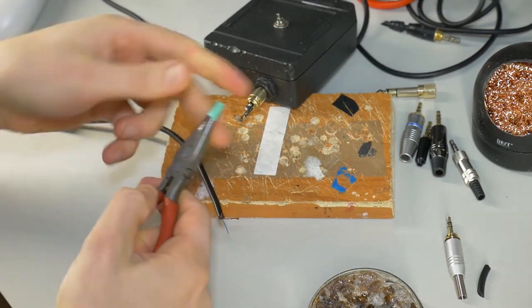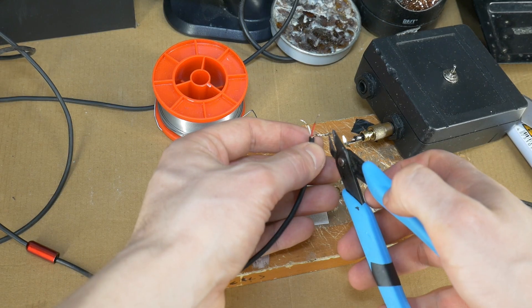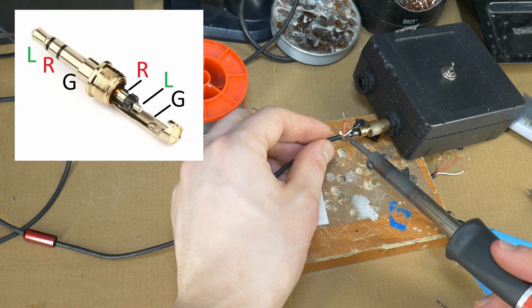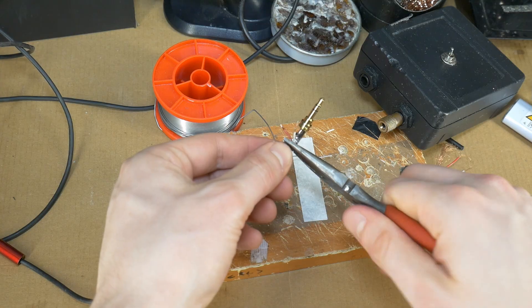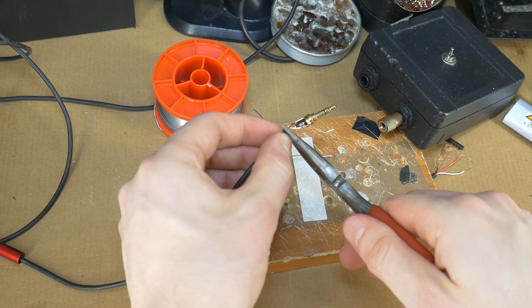Slide some heat shrink tubing onto the cable. Cut the ground wire slightly shorter and solder it to the correct contact on the jack. Clamp the cable in place with the jack's built-in clamp.